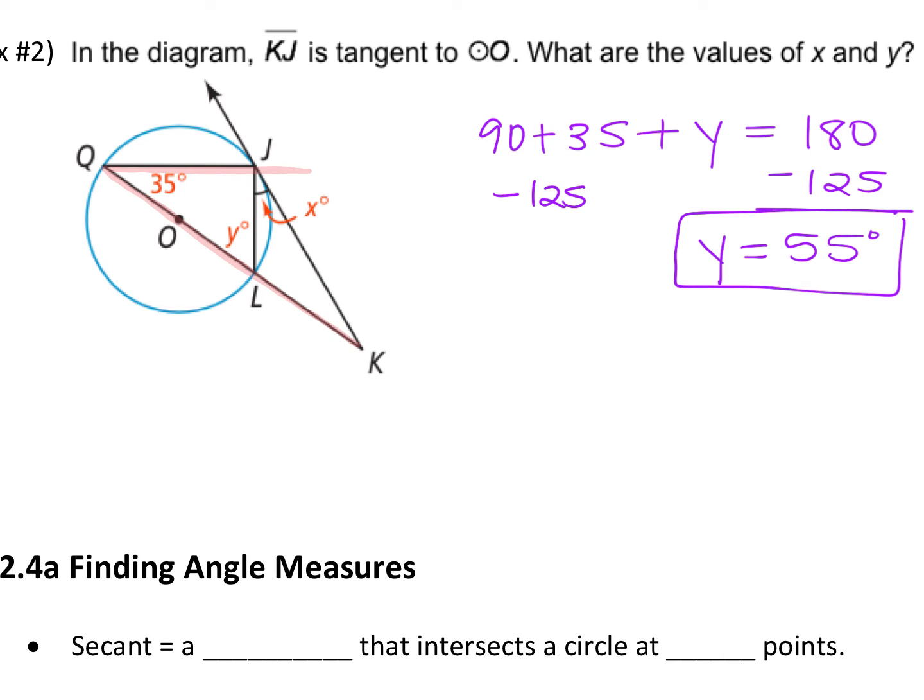That inscribed angle opens up to the intercepted arc. That intercepted arc is arc JL, right? So that means arc JL is 2 times 35, so 70. Oh, because it's an arc and you double it. Because we took the inscribed angle and we doubled it. How does that help us find X? Because you divide it by 2. Right. So now look at this, a chord and a tangent.